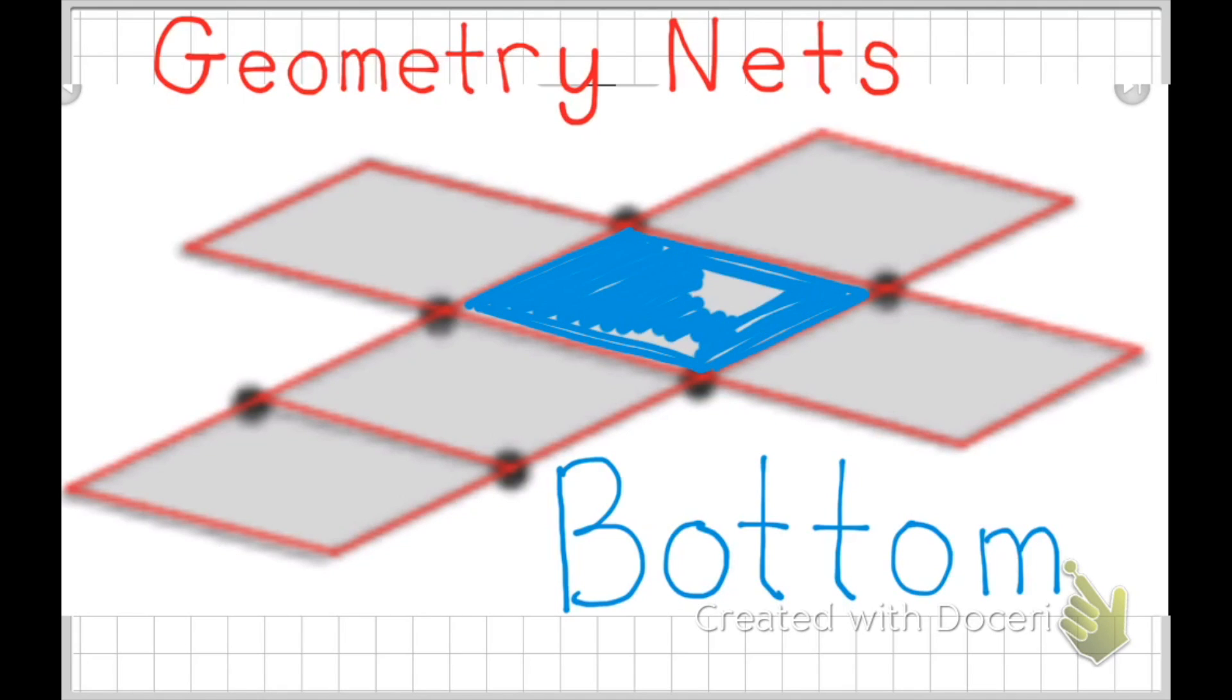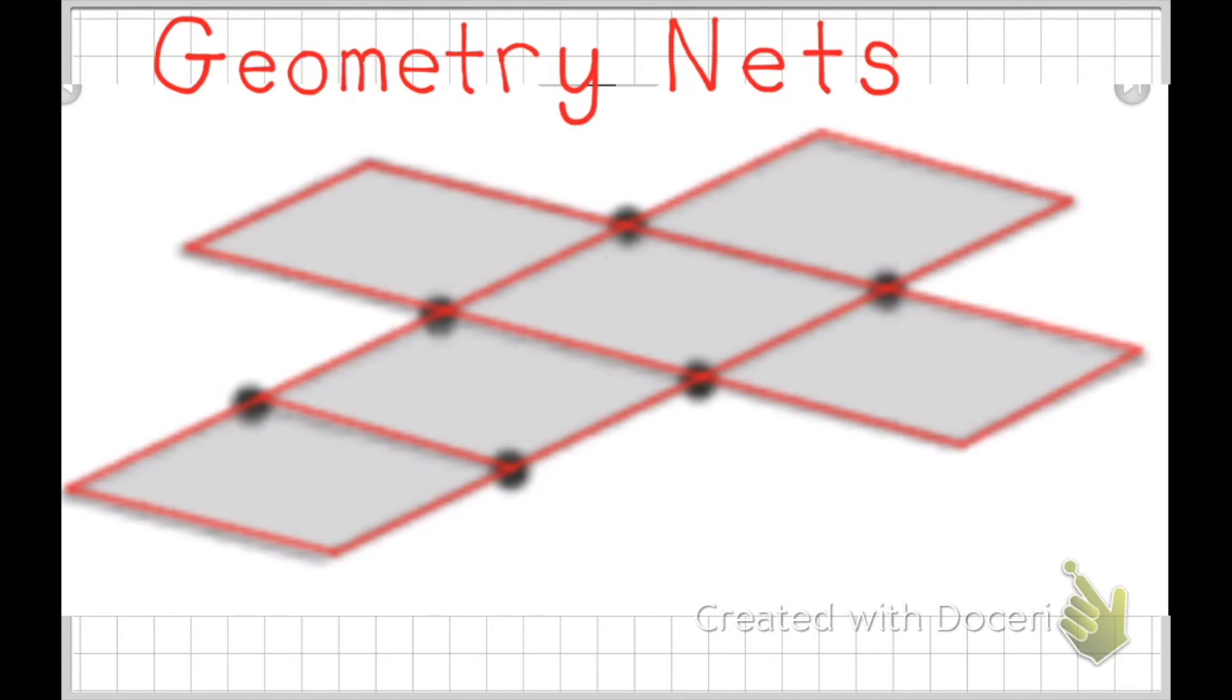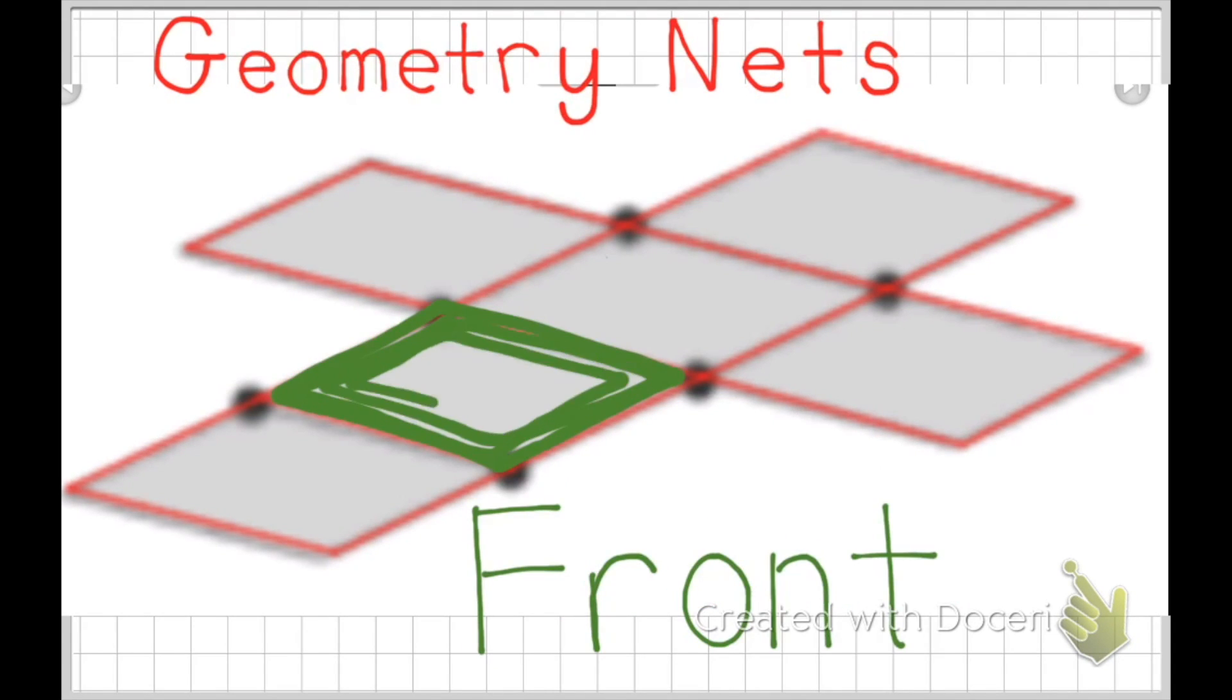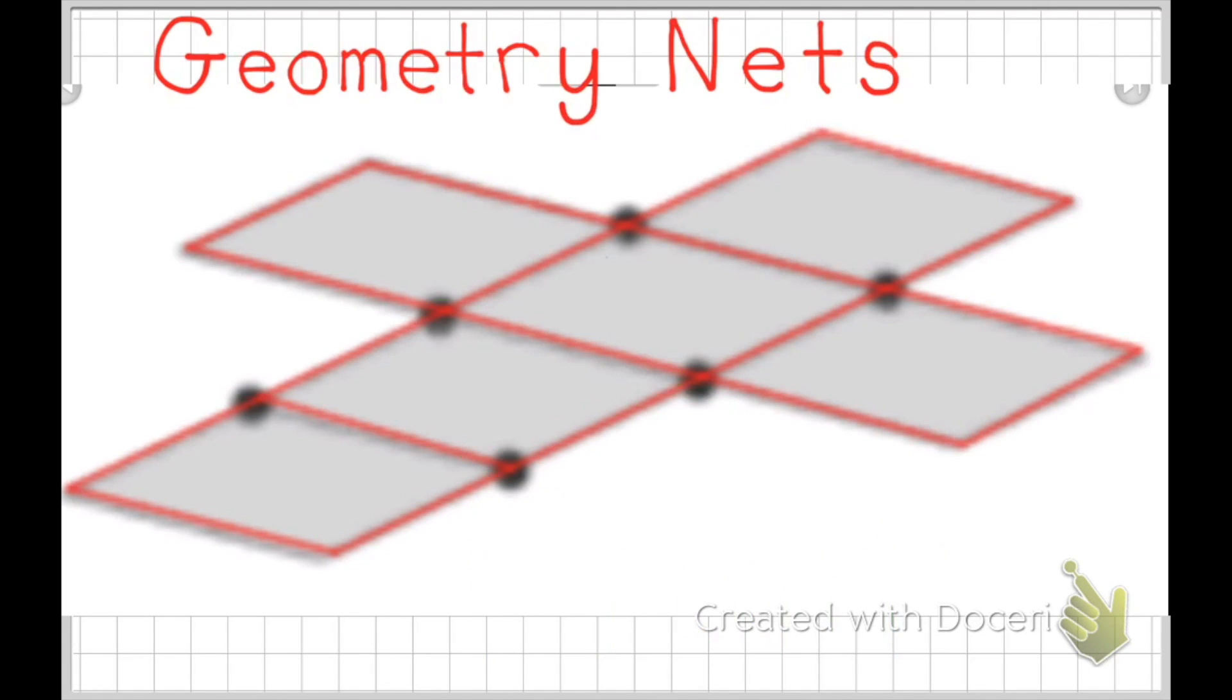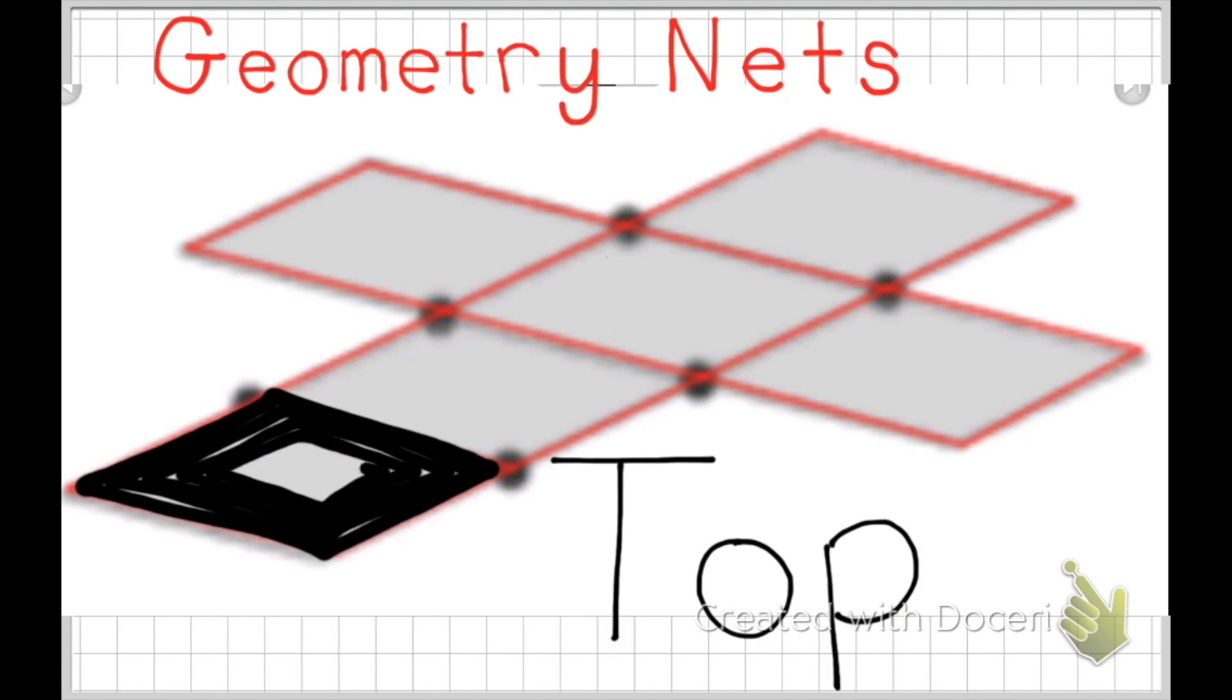I chose a few different colors at random to help represent the different faces of the cube. The blue section represents the bottom. The red section represents the back. The green section represents the front. The black section represents the top.